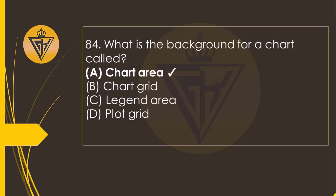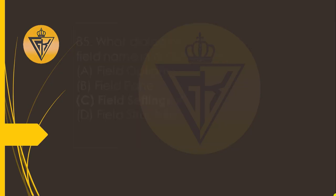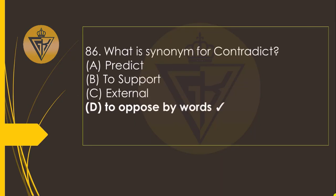What is the background for a chart called? The option A: Chart Area. What dialog box allows you to change a field name in a pivot table? The option C: Field Settings. What is the name for contradict? The option D: to oppose by words.